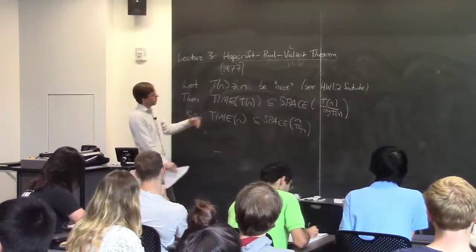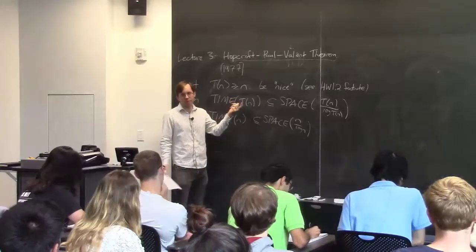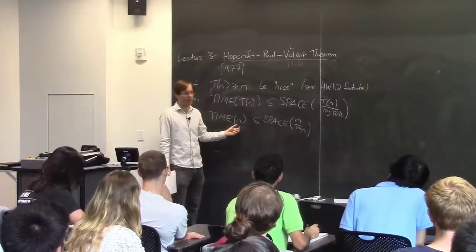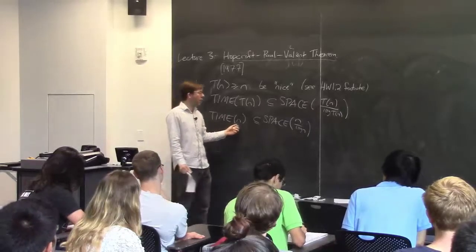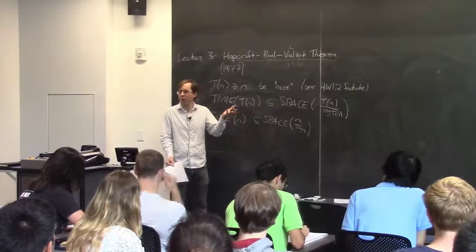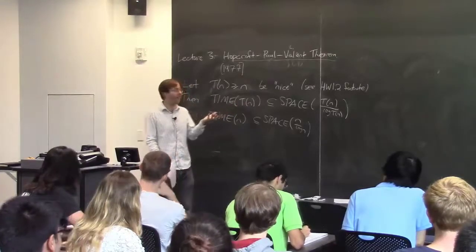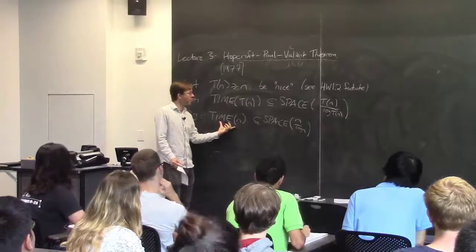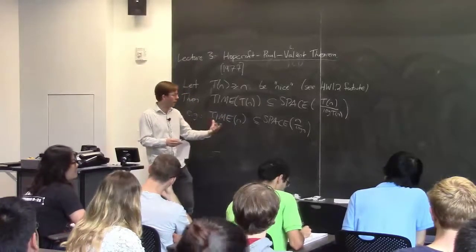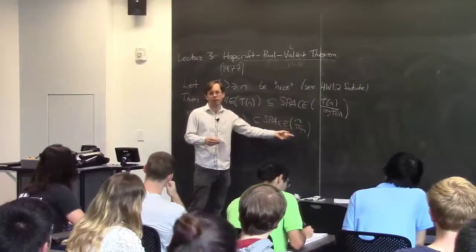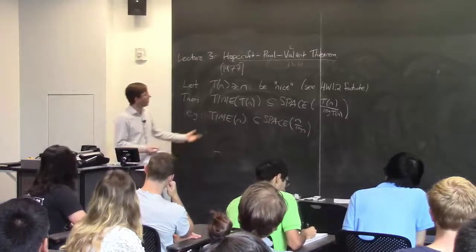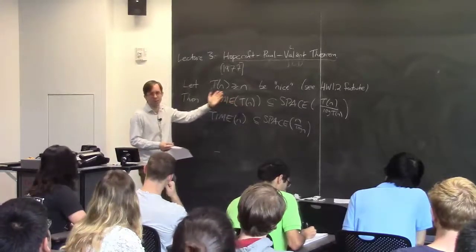For the rest of the lecture I'm going to prove this for the general time bound T(n), but really it was a choice — I could have just done it for the specific linear case, because once you have that, you can get it for larger functions by padding, the same as homework 1 problem 3a. Once you know this, you can artificially pad your input lengths from n to n², and you'll get that time n² is contained in space n² / log n. So I'll just do it with capital T.